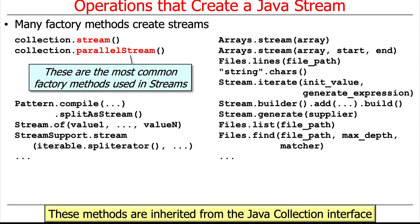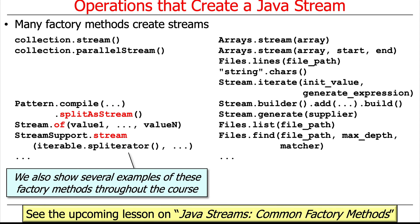There are also some other methods we'll look at: Stream.of(), which I think we've already talked about; Pattern.compile().splitAsStream(), which is used for regular expression processing and pattern matching; and StreamSupport.stream(), which is used by stream() and parallelStream() in order to take a collection and convert it into a stream. We'll talk at more length about these methods when we get further along.